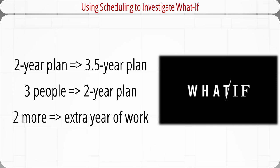Failure to consider resource limitations can lead to serious problems. If used effectively, software can be very helpful when investigating what-if scenarios. For example, an organization developing a two-year project plan using Microsoft Project appeared to be doable — until someone noticed the resource column was blank. When resources were included, the two-year project turned into a 3.5-year project due to shortage of specific labor skills. However, the project manager realized that adding only three skilled people would allow the project to finish within the two-year plan, and hiring two more beyond that would allow an extra year of work to be compressed into the two-year plan.